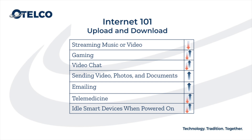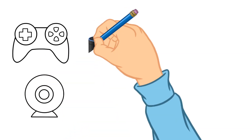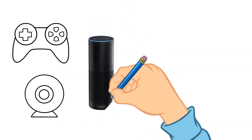Anything that comes to you from the internet is download — streaming video entertainment, receiving emails and other files, and audio and video from the person you're Skyping with. There are many activities that require both upload and download at the same time, like gaming, video chatting, and smart home devices like Alexa and others.